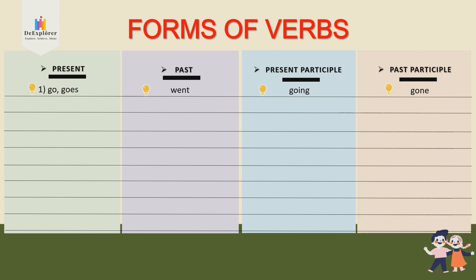Now I want you to write nine more verbs. Number two: draw, draws. Past tense: drew. Present participle — the verb with -ing form — drawing. And the past participle is drawn. In case you do not know the past participle of the verb, please take out your workbook and refer to the first pages. You can find the past participle there.